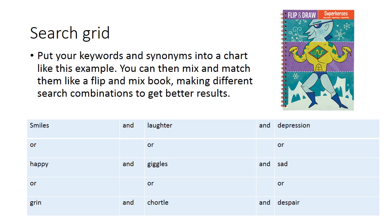I've then taken those words and added them into this search grid along with various other synonyms. If you can think of this as a flip book where the head, body, and feet might be different, you can mix and match your search terms in the same way. So we might search for smiles, giggles, and depression and come up with different results than if we searched for happy, laughter, and despair.